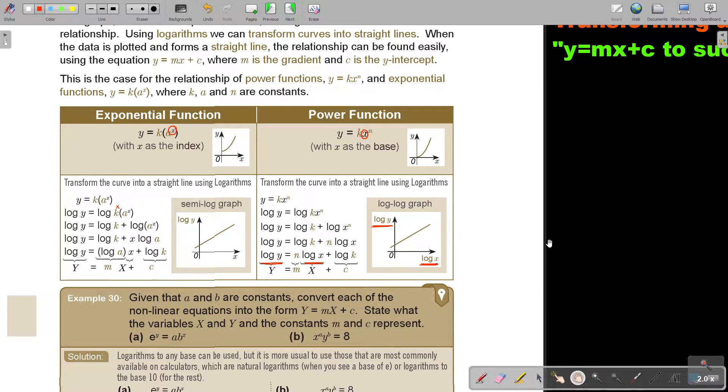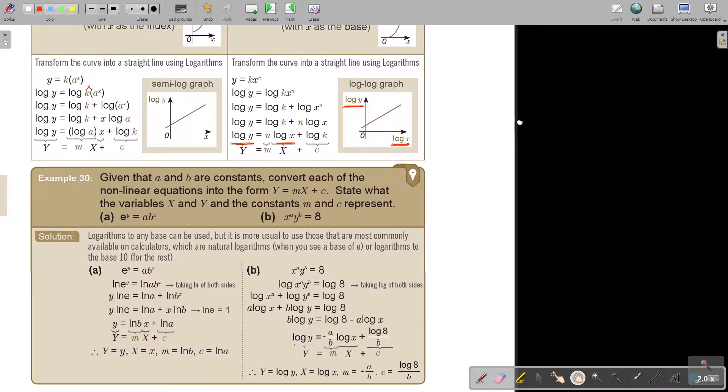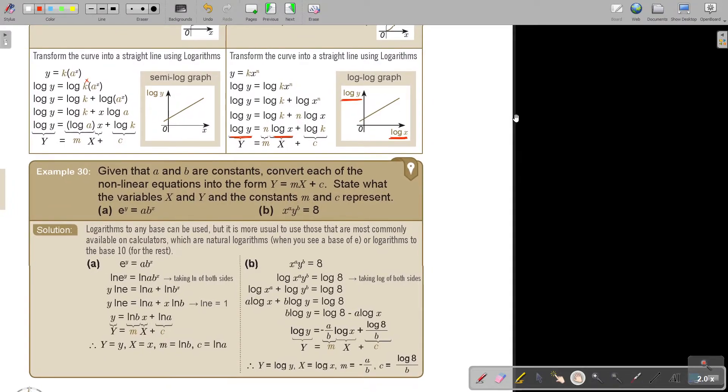Before we're going to find the values of the constants, we're first just going to learn to transform it from a curve to a straight line. Given that a and b are constants, convert each of the non-linear equations into a straight line. Don't forget, the x is on top, so it's exponential. The x is on the base, or on the ground, then it's going to be a power function.